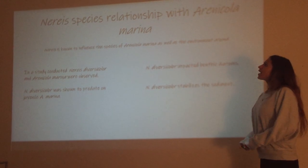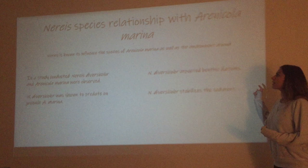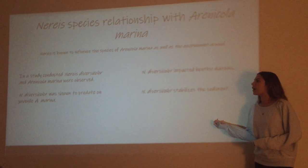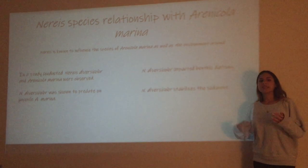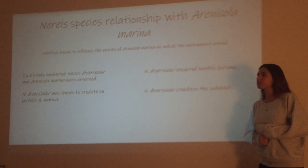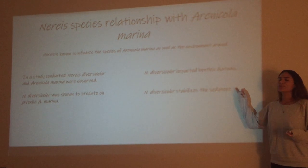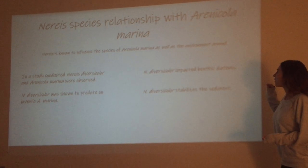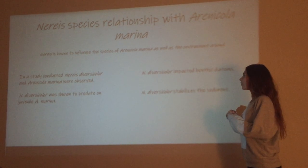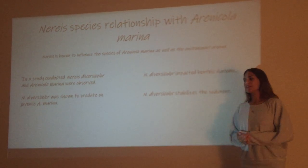Nereus has various relationships with its environment and surrounding species. One relationship is with Arenicola marina — it's actually a negative relationship because in a study it was found that Nereus was predating on juvenile Arenicola, causing the Arenicola population to greatly decrease or even be absent whenever Nereus was around. Nereus was also found to impact benthic diatoms by preventing them from colonizing when present. However, they also act as sediment stabilizers, which as we learned in class, is really important for other species around them.